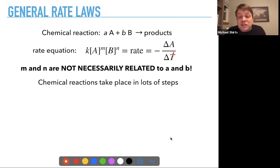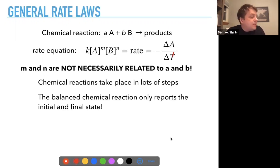So chemical reactions do take place in a lot of steps. The balanced chemical reaction only reports the initial and final state, so frequently the actual kinetics depend on some intermediate state. So the stoichiometric coefficients, talking about the overall reaction, don't necessarily relate directly to the mechanism that is actually, the mechanistic step that's actually the rate limiting step.